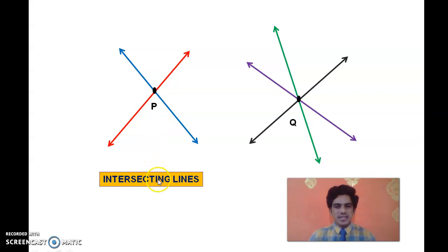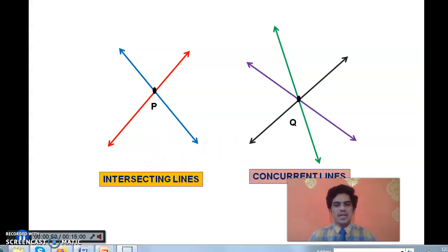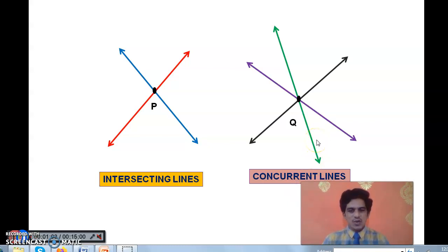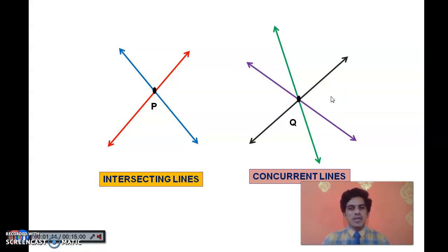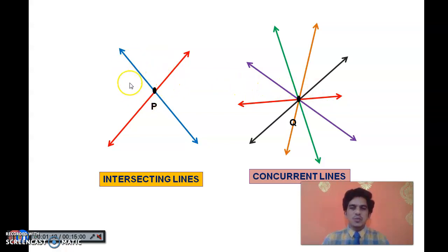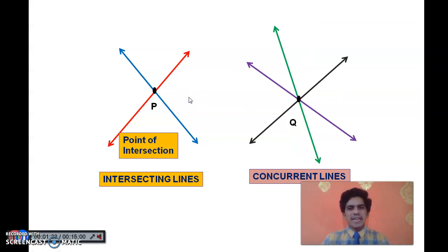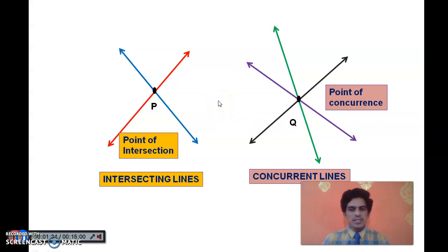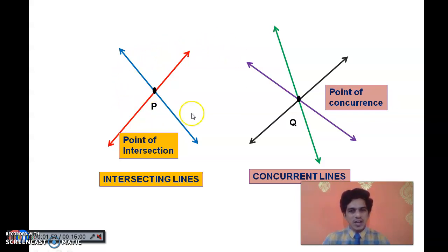We call these two lines as intersecting lines. And these three lines are actually called concurrent lines. So on a plane, if two lines have a common point, they are called intersecting lines. If more than two lines have a common point, we call them concurrent lines. Point P is the point of intersection, and Q — common to all three lines — is called the point of concurrence. If three or more lines have a common point, the point is called point of concurrence and the lines are called concurrent lines.